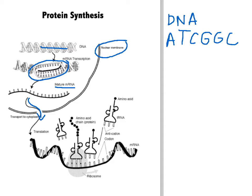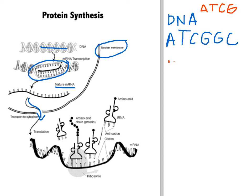In DNA, we have the bases A, T, C, and G. In RNA, we have the bases A, U, C, and G. So if I was going to write the complementary strand of this DNA strand, the first one would be a U bound to this A. Then because RNA has an adenine, we would have an adenine bound to that thymine. Then guanine would bind to that cytosine, cytosine would bind to the guanine, cytosine again would bind to the guanine, and our last one is a cytosine which needs a guanine to bind to it.